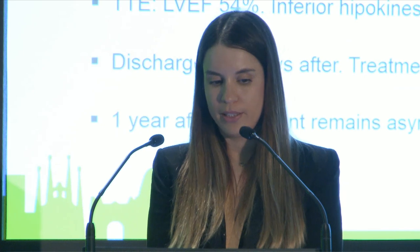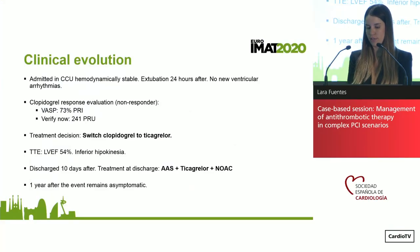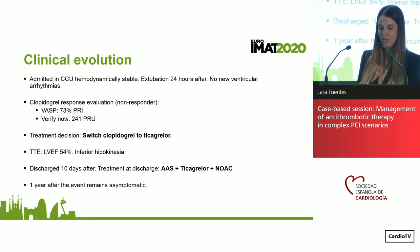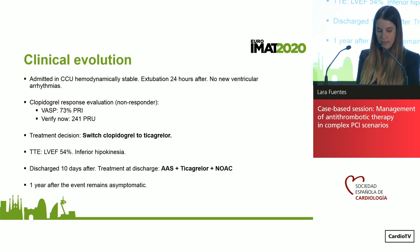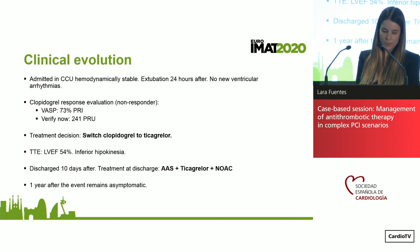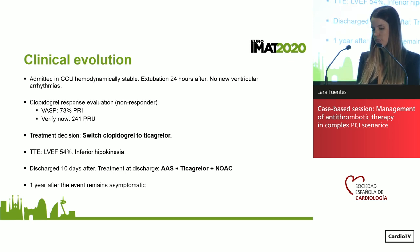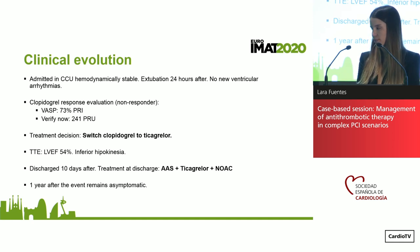The patient was admitted in the cardiac ICU, hemodynamically stable, extubated at 24 hours after the second procedure, with no new ventricular arrhythmias. The decision was to evaluate clopidogrel response: the patient was found to be a non-responder with a VASP of 73% PRI (non-responder when VASP >50%) and a VerifyNow of 241 PRU (non-responder when >208 PRU). The treatment decision was to switch from clopidogrel to ticagrelor. Echo showed a practically normal ejection fraction. The patient was discharged 10 days after with aspirin, ticagrelor, and rivaroxaban, and remained asymptomatic one year later.